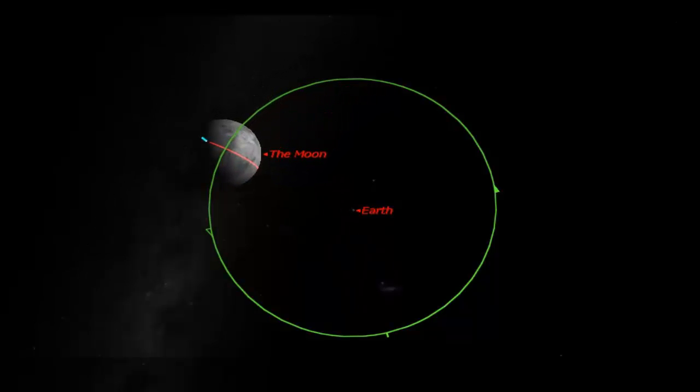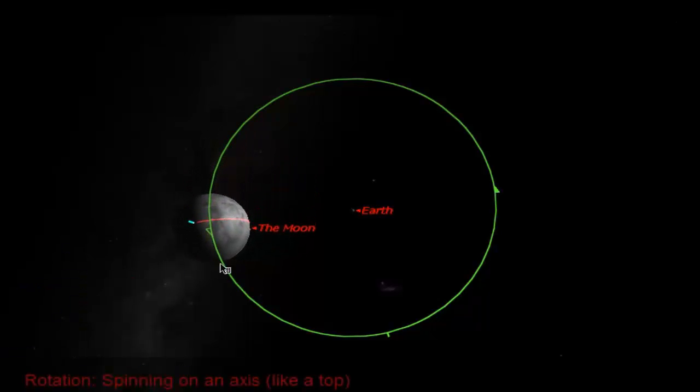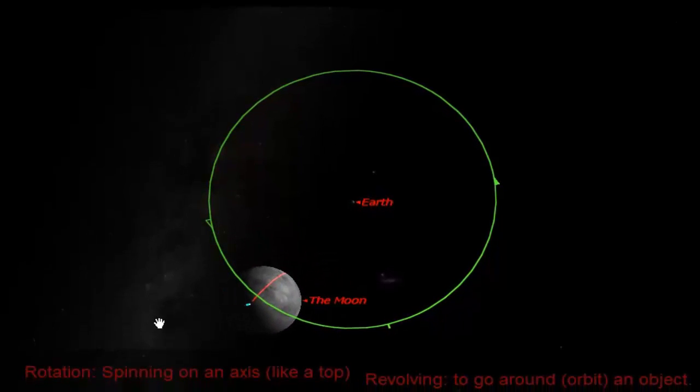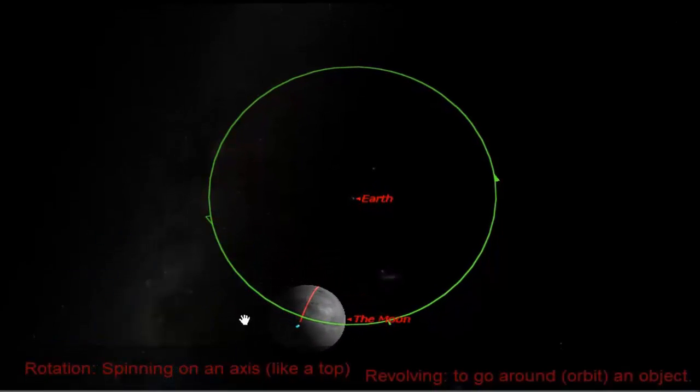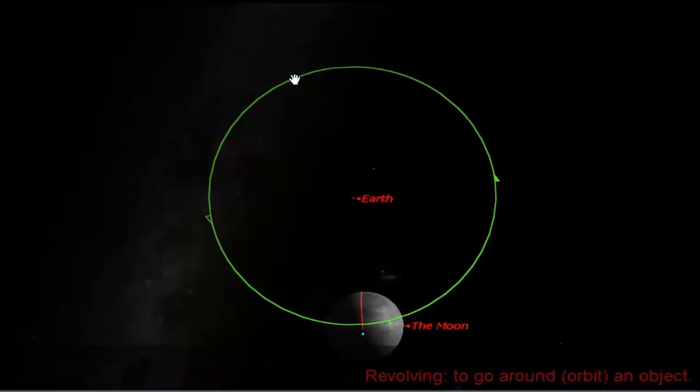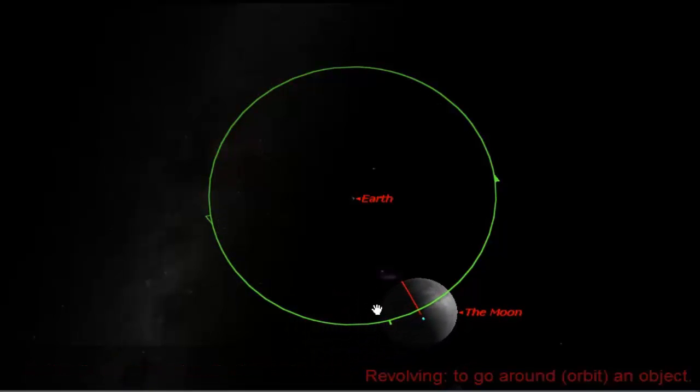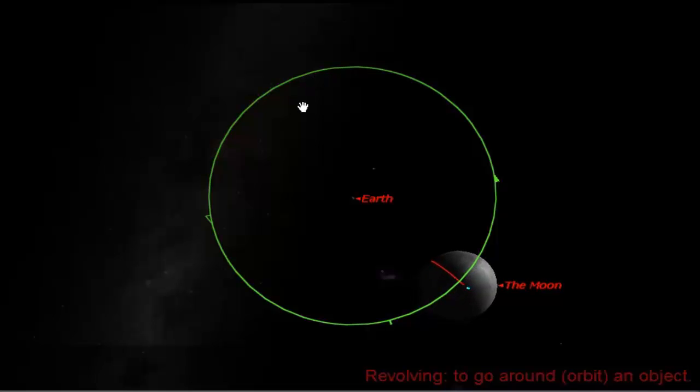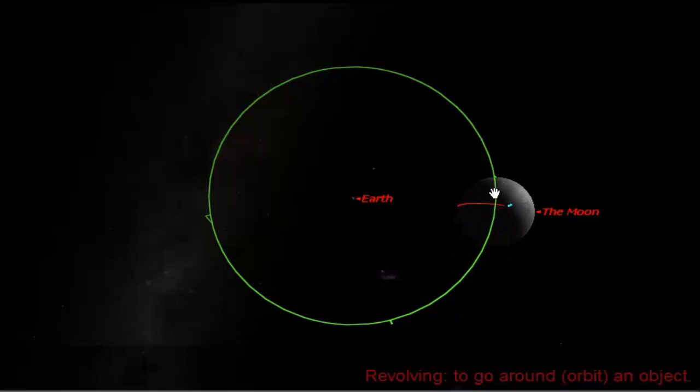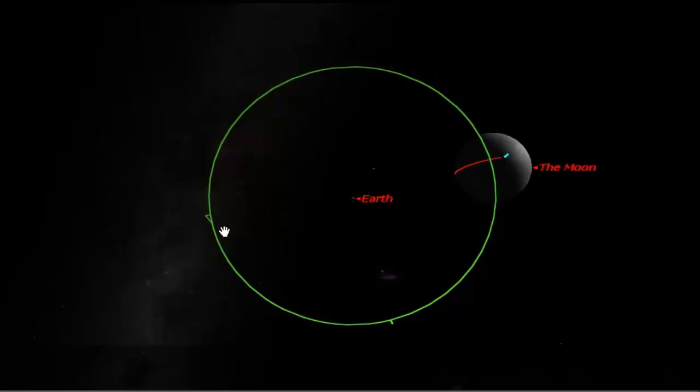Two words that you want to jot down in your notes: rotation and revolution. Rotation is spinning on an axis like a top. The moon is definitely spinning on its axis as it is revolving, or another word that would be synonymous is orbiting, going around something. As the moon rotates on its axis, it's also revolving around the Earth.